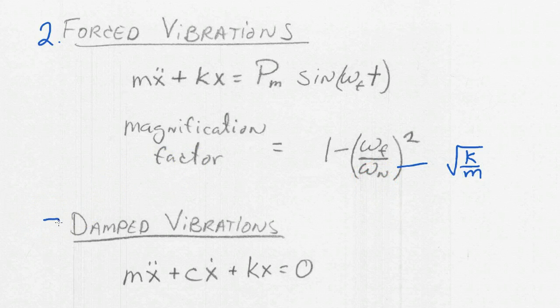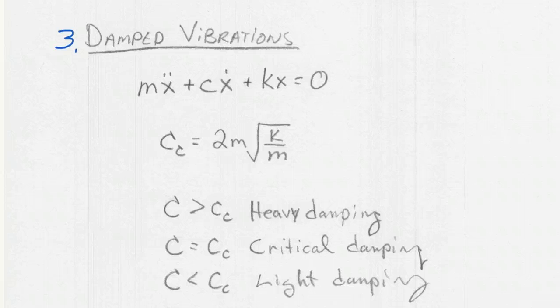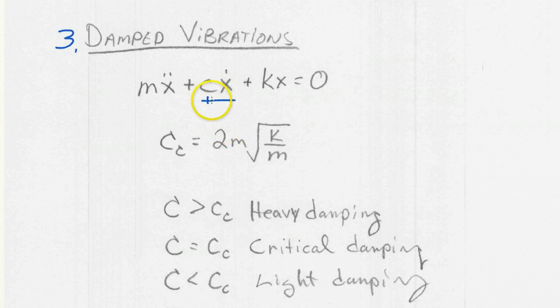And now here's the third topic under vibrations: damped vibrations. The main idea here is that we add in a new term that's kind of the friction term, and it's characterized by c. So c is somehow related to how much friction is in the system, and that's dependent upon the velocity. So we add this new term to the equation. And when we solve the differential equation, we find that there's this critical c coefficient, and that critical value is 2m times the square root of k/m.